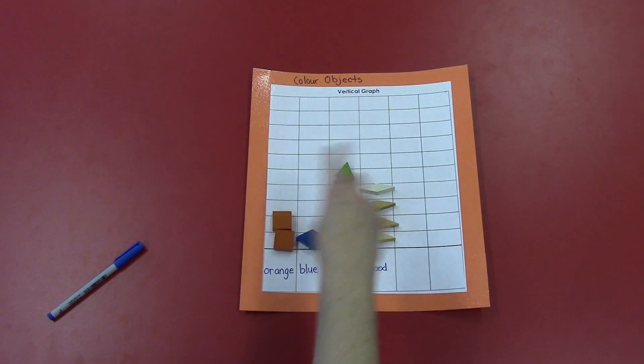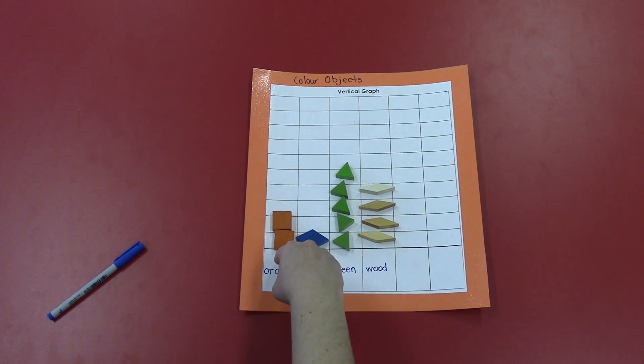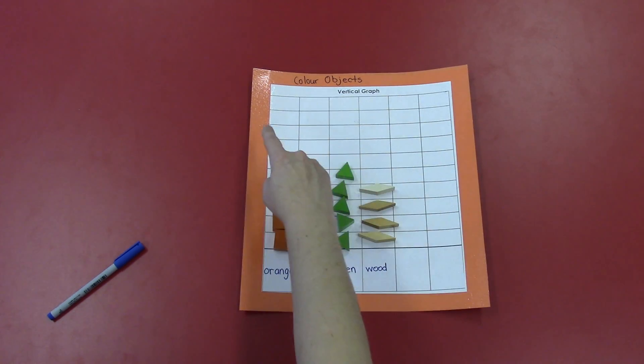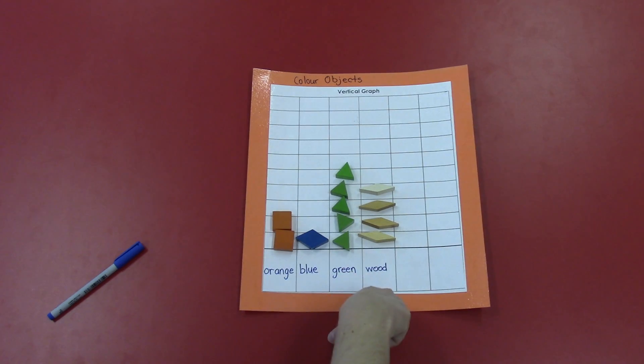Once I'm done graphing, I want to double check that everything makes sense. Orange, blue, green, wood, color objects. Those all make sense. Now I can start analyzing my graph.